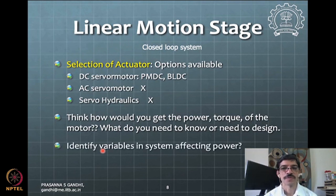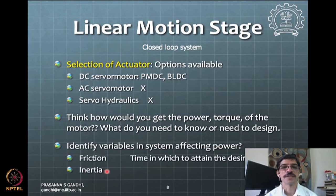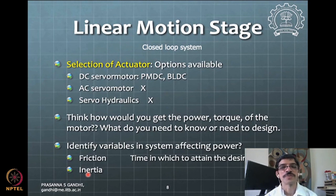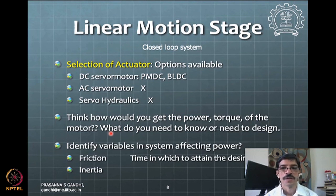Friction is one element and inertia is another that will affect power. For friction estimation, you should have some ballpark figure. Use online tables to find the coefficient of friction between the two surfaces, with or without lubrication. Look at the normal reactions in your application to estimate μ × N — the friction force — and then the friction torque.